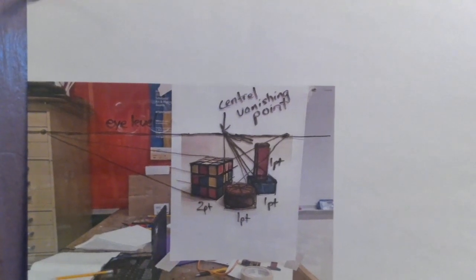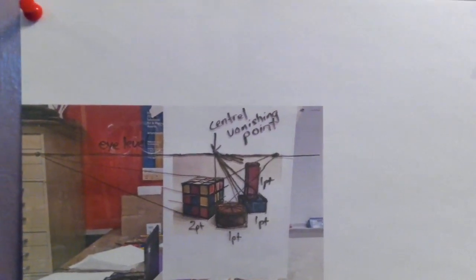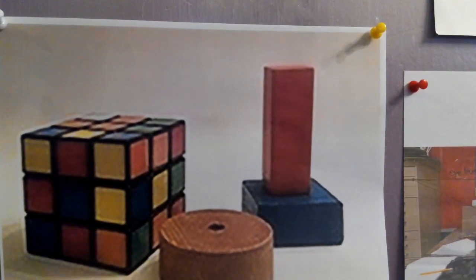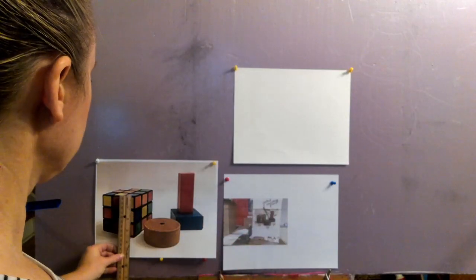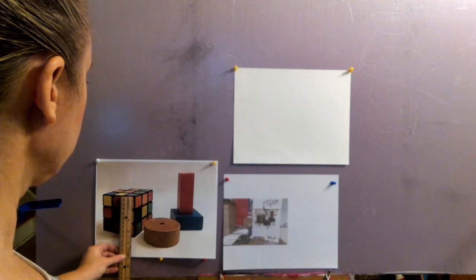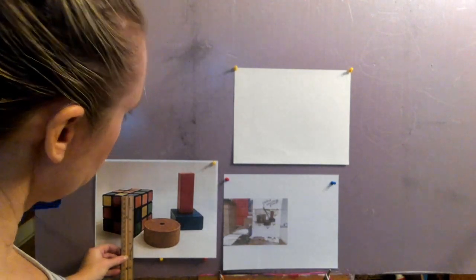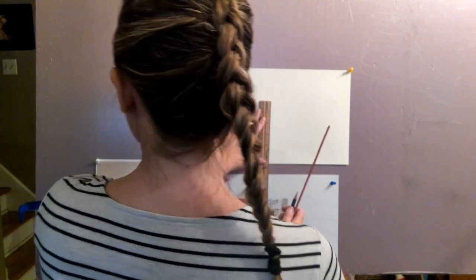This is the picture that I'm going to draw from. I had taken the photo and figured out where the eye level would be. Now I'm looking at and measuring the corner of the Rubik's Cube because I'm going to do this at a 1 to 1 scale.